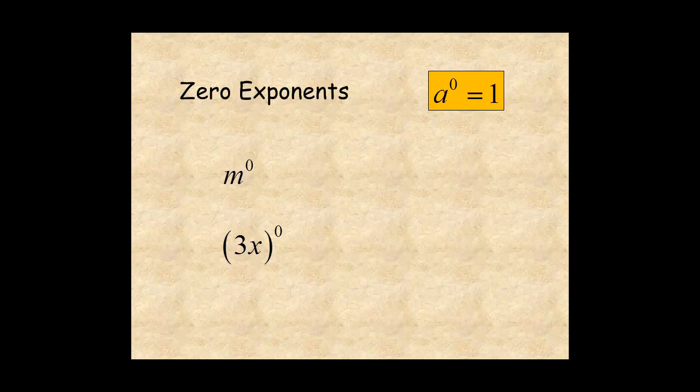So m to the power of zero is equal to 1. With parentheses, 3x to the power of zero is also equal to 1.